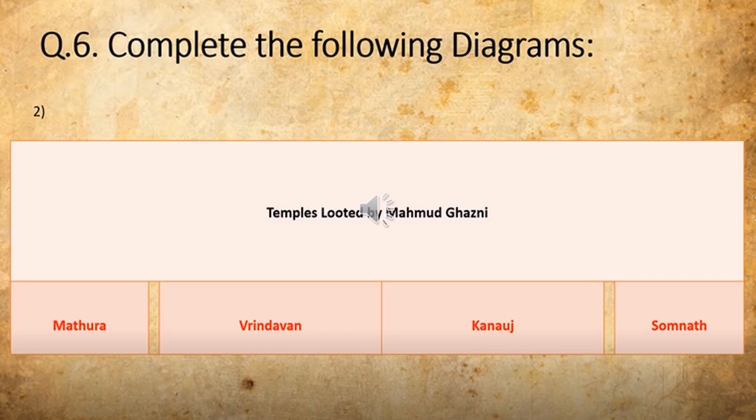Here also options will be given — two will be wrong and names of other two temples will be given. One will be correct — Mathura will be given, or Vrindavan, or Kannauj, or Somnath. Then you have to click: temple looted by Mahmud Ghazni. So we will click at the right option.